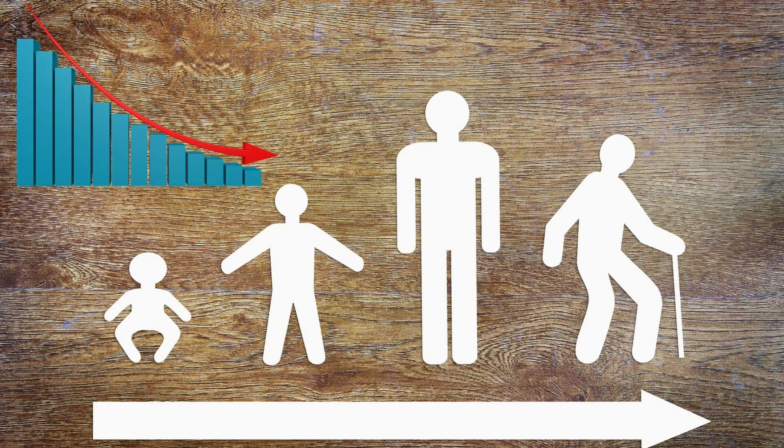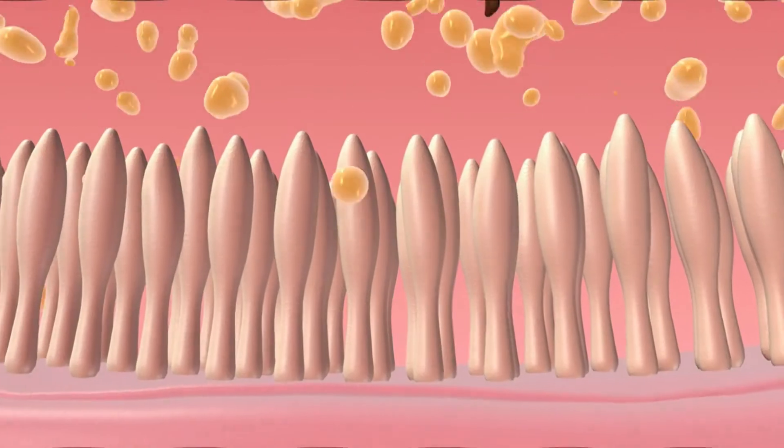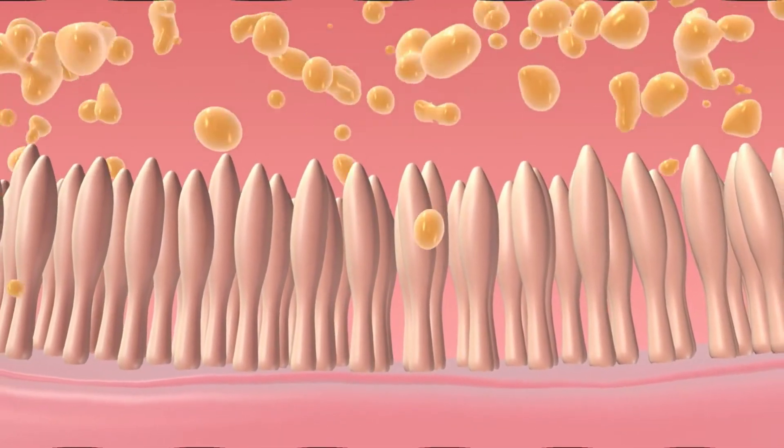When the Dhatus become depleted, it cuts short the life itself. Here the Doshas can be understood as inflammatory toxin-producing senescent cells.